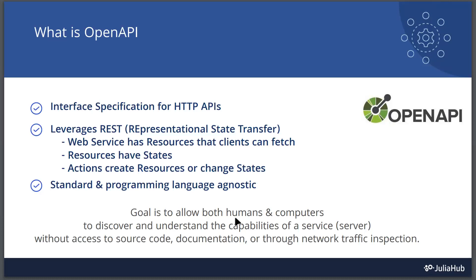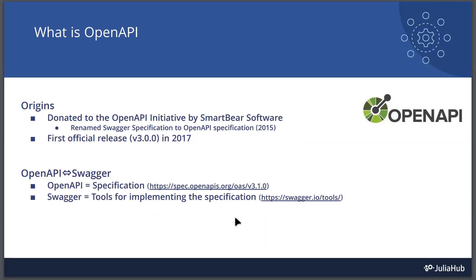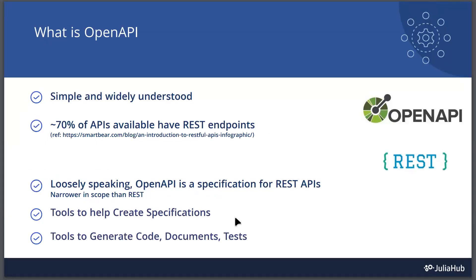Regarding the origins of OpenAPI: it was contributed by a company called Smartware, who donated it to the OpenAPI Initiative. It was originally named Swagger, and was renamed to OpenAPI when donated around 2015. The first release of the OpenAPI spec happened in 2017 as version 3. Versions up to v2 are usually called Swagger specifications. Smartware continues to focus on tools around OpenAPI, calling their tools Swagger tools.